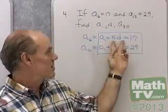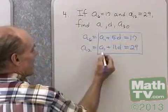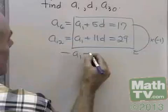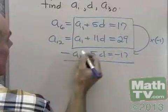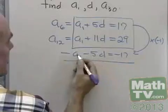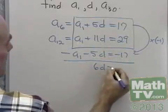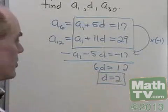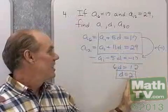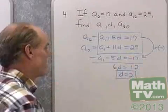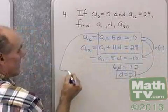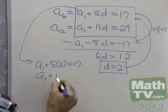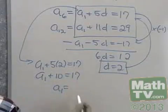So what we have is a system of linear equations in two variables, a1 and d, which I can solve using any method. The easiest way is to multiply the first equation by negative 1 and add it to the second. That gives me negative a1 minus 5d equals negative 17. Adding to the second equation, I end up with 6d equals 12, so d is equal to 2. Now substituting d back into the first equation: a1 plus 5 times 2 equals 17, so a1 plus 10 equals 17, meaning a1 is equal to 7.